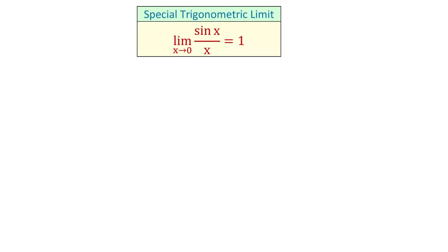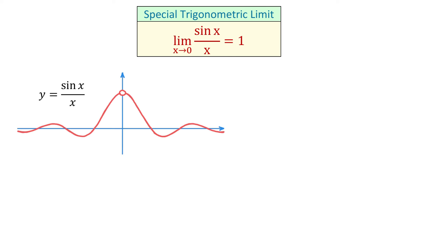Hello! In this video we will talk about a special trigonometric limit: the limit of sin(x) over x as x approaches 0, which equals 1. The function sin(x) over x is not defined at 0, and its graph displays a wave-like pattern with oscillations that decrease in amplitude as the distance from the center increases.